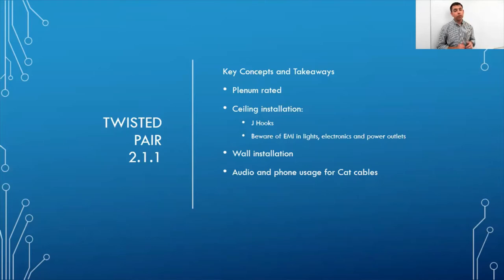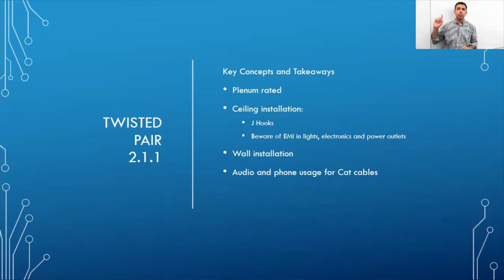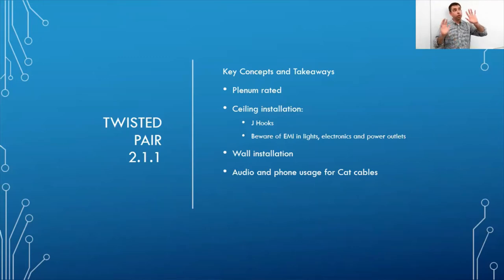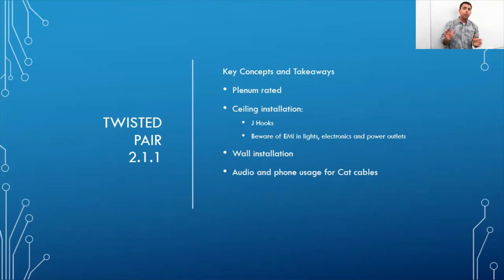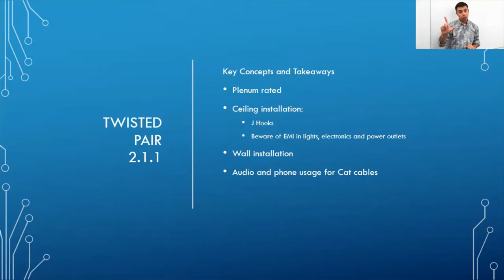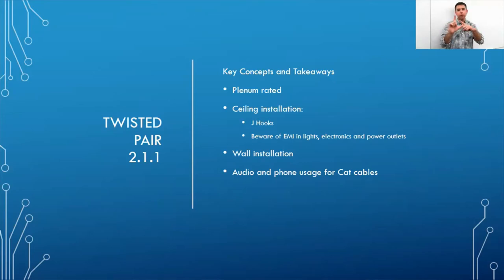In drop ceilings, use J-hooks to run cables properly. Don't just string cables over ceiling panels or let them dangle on lights. J-hooks are J-shaped brackets that screw into ceiling joists and have clips to keep cables organized along a neat path, away from power lines and away from the panels.